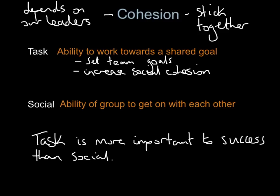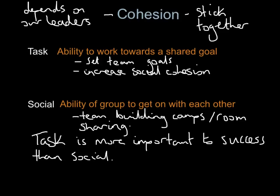You want both types of cohesion. Two key ways to increase task cohesion: set a team goal — a SMART target everyone aims towards — and also increase social cohesion, which should boost task cohesion too. To improve social cohesion, things like team-building camps and room sharing help — when going away for a fixture, get two or three players in a room together so they get to know each other socially. Finally, be aware of cliques — three or four players who gossip with each other lead to low social cohesion. You've got to disrupt the formation of cliques within your group.